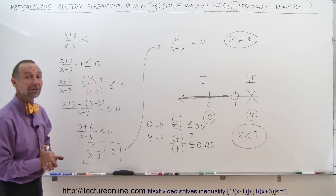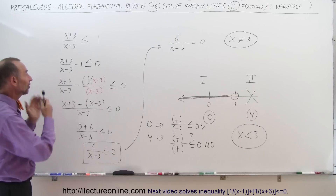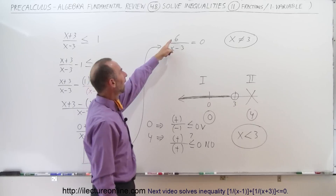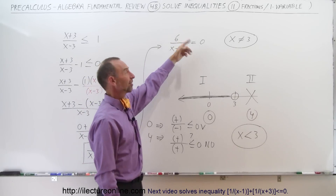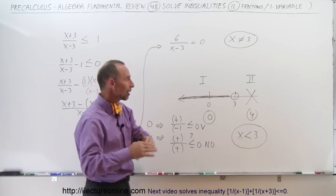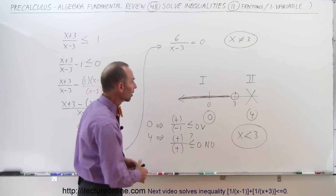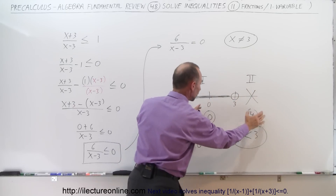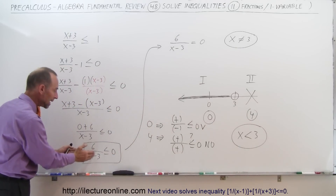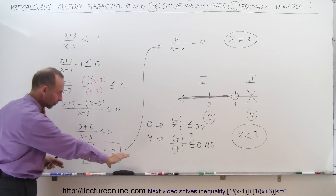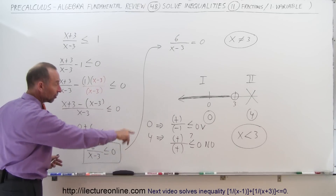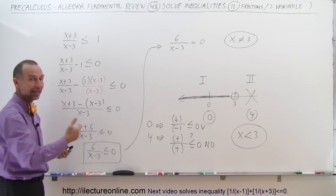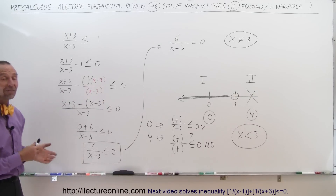This is an interesting problem. You might initially wonder whether any solution exists if no value of x makes the expression equal to 0, but you don't have to stop there. Continue the process: find the critical point, identify the two regions, pick test points, and plug them into the inequality with 0 on the right side. Here, x equals 0 gave a valid solution, so anything to the left of 3 satisfies the inequality.